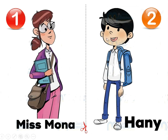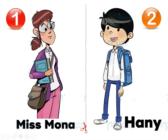Number one: This is Miss Mona. She is a teacher. Number two: He is Hany. He is a boy. بتكون ولد. Number three: She is Hana. She is a girl. دي بتكون بنوتا.